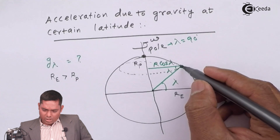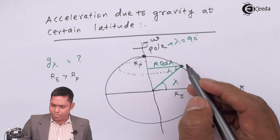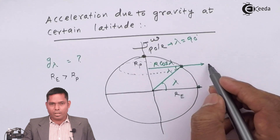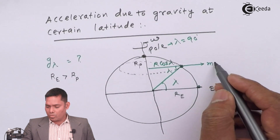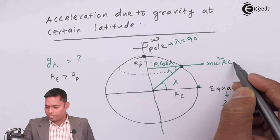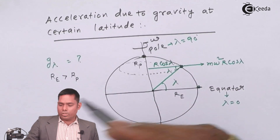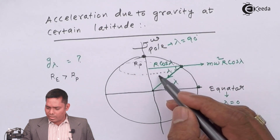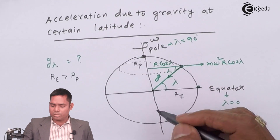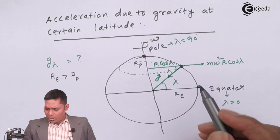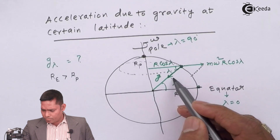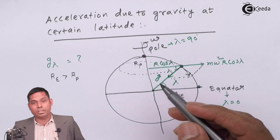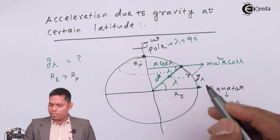Because the point is spinning, a centrifugal force will act outward — that is M omega squared times R cos lambda. This is the centrifugal force the object is subjected to. The earth will also pull the object toward itself with acceleration due to gravity G. I need to find the resultant of these two forces, which gives G lambda — the effective acceleration due to gravity.